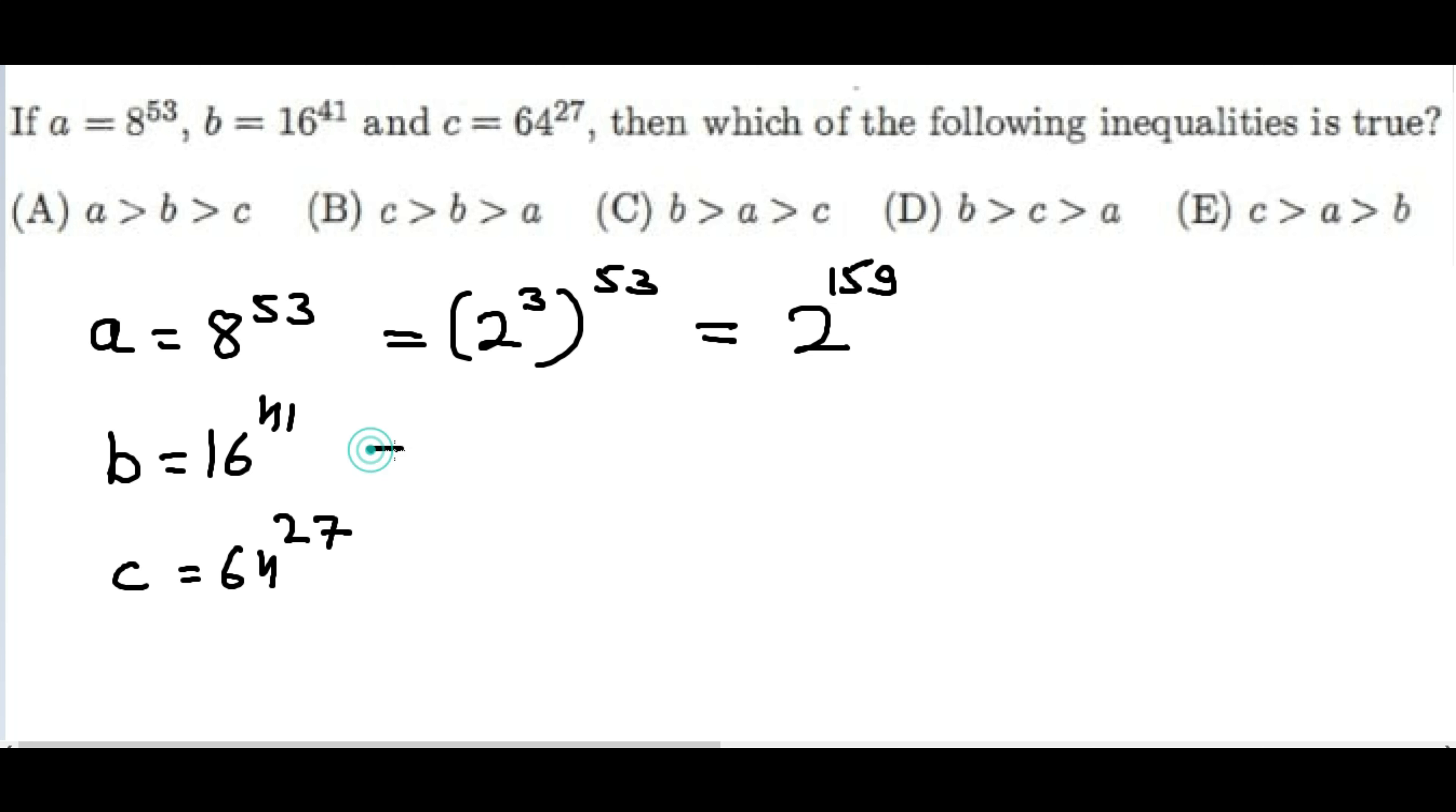What about b? 16 can be written as 2 to the power 4, and we have 41 outside, so let me do that: 4 times 1 is 4, 4 times 4 is 16, so we get 2 to the power 164.